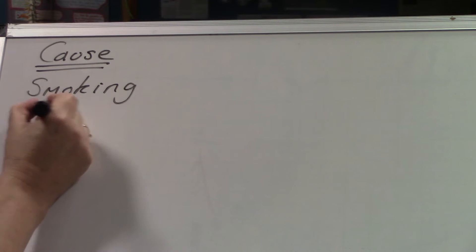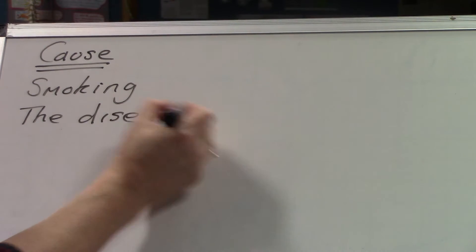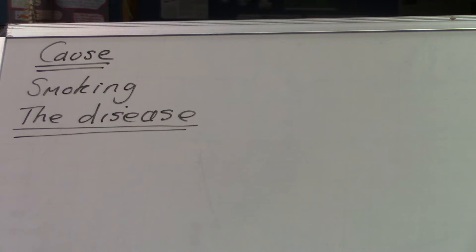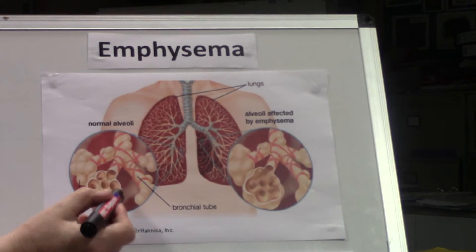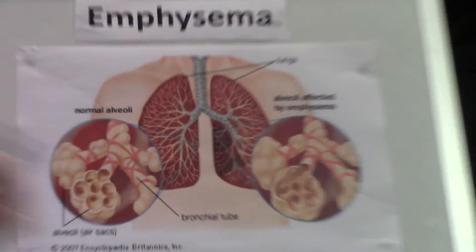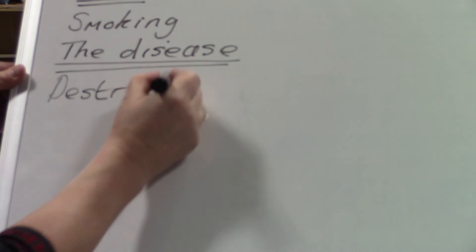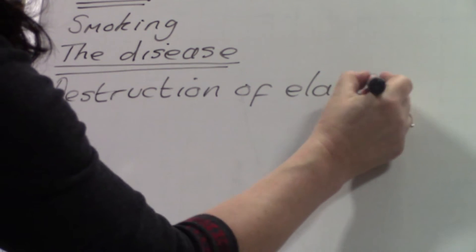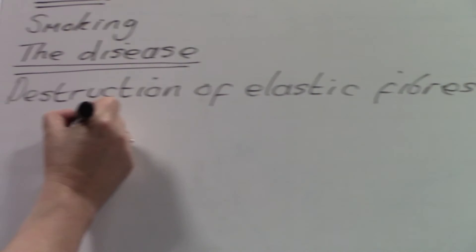The disease itself. In emphysema, the main problem is that elastic fibres — elastic protein fibres in the walls of the alveoli — are actually destroyed. So there is destruction of elastic fibres in the walls of the alveoli.